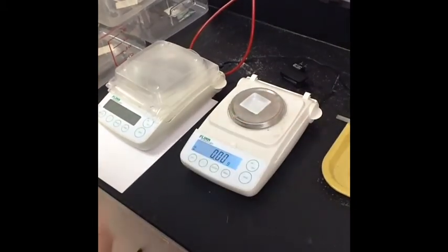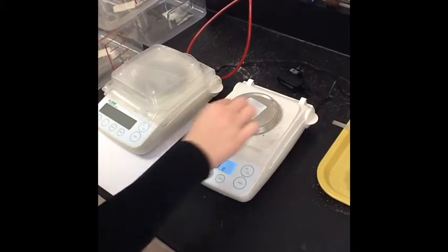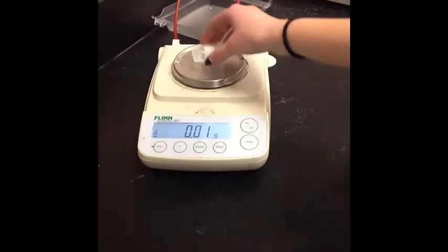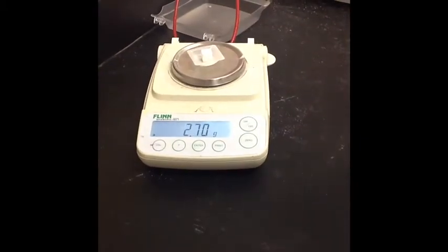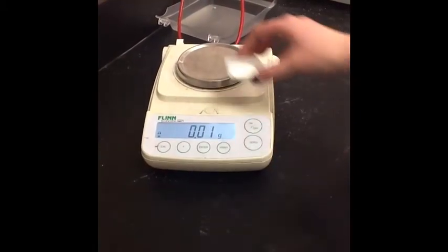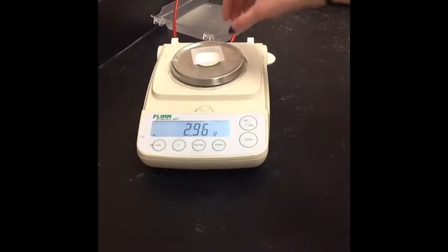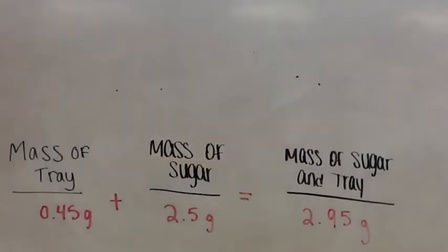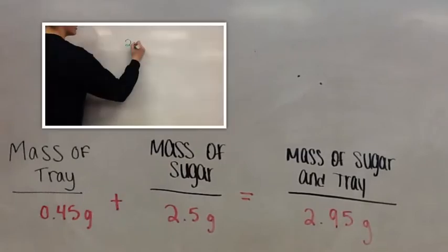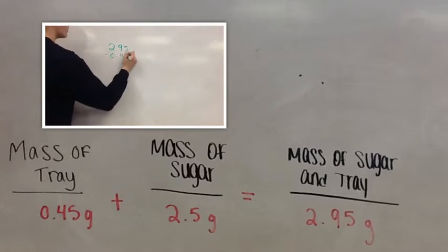First, measure the mass of the tray. After that, measure the sugar cube and the granulated sugar. In this experiment, we dissolved 2.5 grams of both the cubed and granulated sugar. In order to get accurate measurements, we needed to subtract the mass of the tray.